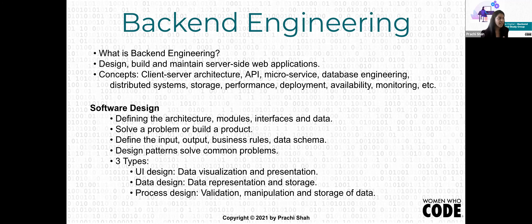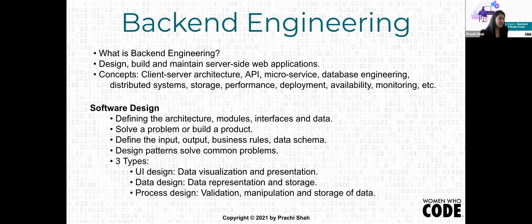You can break design down into three types. First is UI design — how your data looks on a website or mobile app. The screen size is smaller on mobile so you show limited content differently. Second is data design — how you represent, store, and share your data, which is a very important part of software design. Third is process design — what kind of backend validations, data manipulation, and business rule implementations you're doing.